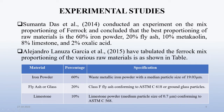Regarding experimental studies: Sumanta Das conducted many experiments with different proportions and concluded that the best proportioning of raw materials is 60% iron powder, 20% fly ash, 10% metakaolin, 8% limestone, and 2% oxalic acid.